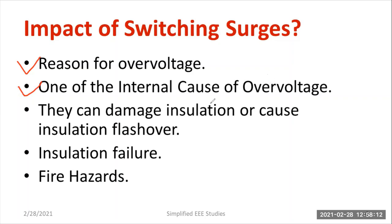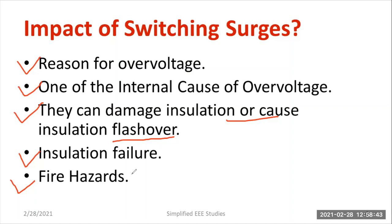We have studied external as well as internal causes of overvoltage. Switching surges can damage insulation or cause flashover — that will definitely take place, leading to insulation failure. For solid dielectric material, permanent failure will occur. For liquid or gaseous dielectric material, the failure will be temporary. It also causes severe fire hazards — as shown in the diagram at the beginning of the slides. These are the major impacts of switching surges.